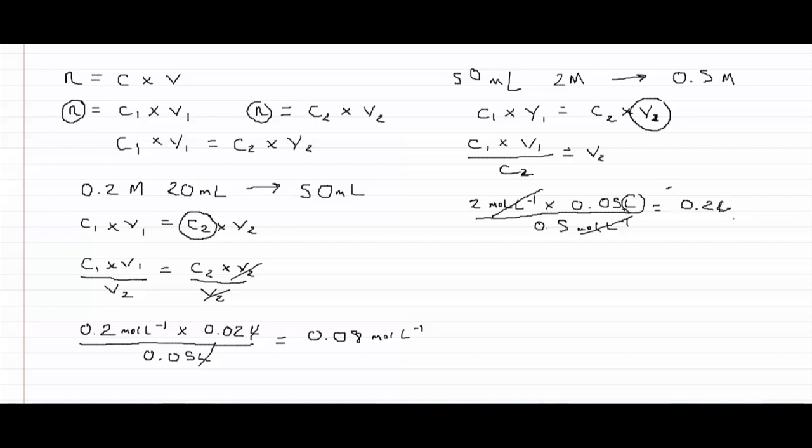But our question was how much water do we need to add? We know that our final volume needs to be 0.2 liters. But we started off with 50 mils. So the amount of water we actually need to add is 0.2 liters minus our initial amount which is 0.05 liters.